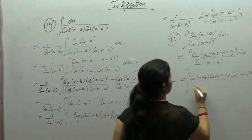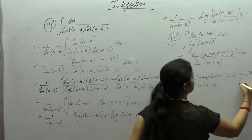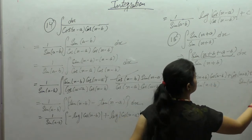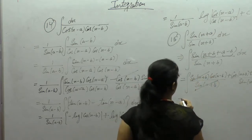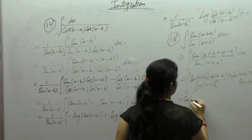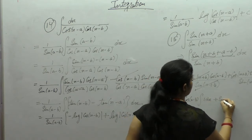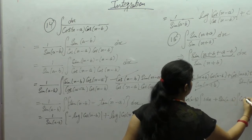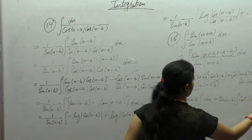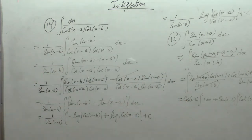In the denominator we have sin(x+b). Sin and sin cancel here. Cos of (a-b) is constant — integration of 1 dx. Sin of (a-b) is constant, and cos upon sin is cot. Integral of 1 is x, and integral of cot is log of sin x.